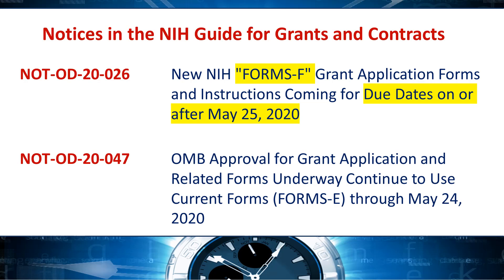That includes all types of applications: new, revision, renewal, and resubmissions, and applications submitted early or late for those due dates. Do not use Forms F for due dates prior to May 25. You must use the current forms, Forms E, for due dates on or before May 24.